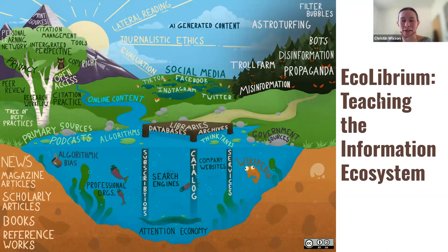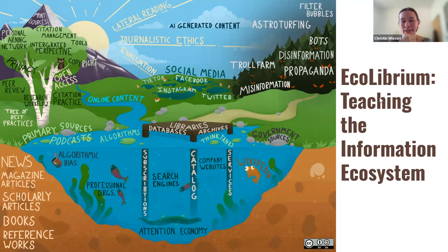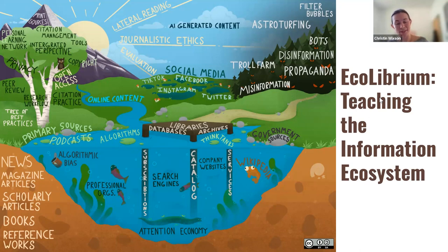Some of the changes that we've made and the new things we're trying are really a response to things that we are observing in our work here in the library. Specifically, we've really come to acknowledge that the set of topics traditionally thought of as the purview of librarians — things like databases, catalog searching, or citations — are really far from the whole story anymore. If we are really going to adequately prepare our students to do research and to make informed decisions throughout their lives, we have to talk about a much broader picture. The analogy we've chosen is an ecosystem.